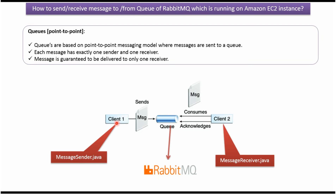Here you can see client one, which creates the message and sends the message to the queue — that is nothing but the producer. And here you can see client two, which consumes the message from the queue — that is nothing but the consumer. Once the message is consumed, client two will acknowledge back to the queue. We are using a queue of RabbitMQ; for client one we have written MessageSender.java and for client two we have written MessageReceiver.java.